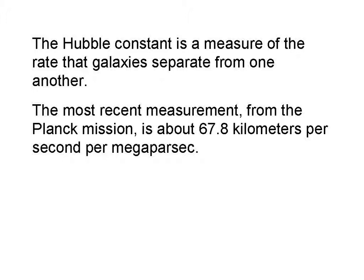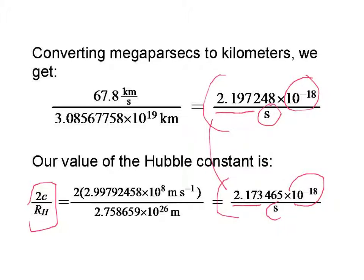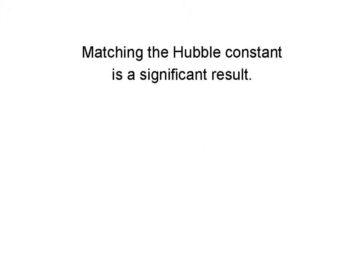The Hubble constant is a measure of the rate that galaxies separate from one another. The most recent measurement from the Planck mission is about 67.8 kilometers per second per megaparsec of separation. Converting megaparsecs to kilometers, we get a value of 2.197 times 10 to the minus 18th per second. Now, 2c divided by the radius of the hyperverse calculates out to be 2.173 times 10 to the minus 18th per second. These values are almost spot on, and matching the Hubble constant is a significant result.